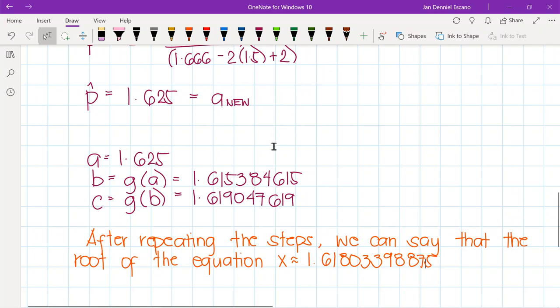So that is how we accelerate convergence using Steffensen's method or Aitken's delta square method, which is almost the same with each other. That is it for Steffensen's method.